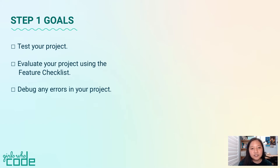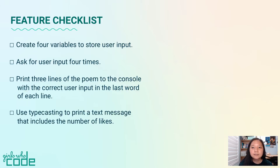Let's return to our feature checklist to make sure we have completed all of our tasks. We'll run the program, then check off each item. Run your code to save your work and to make sure your program will be able to run.